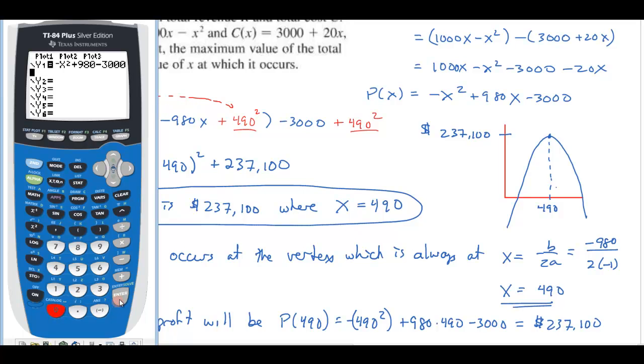Now the downside of this is if I just graph it in my standard window, I'm probably not going to get anything. Right? Because this is just between, you know, -10 and 10. Of course, this is way out here at 490. Hindsight's everything, isn't it? I know the graph is going to look like this. In fact,